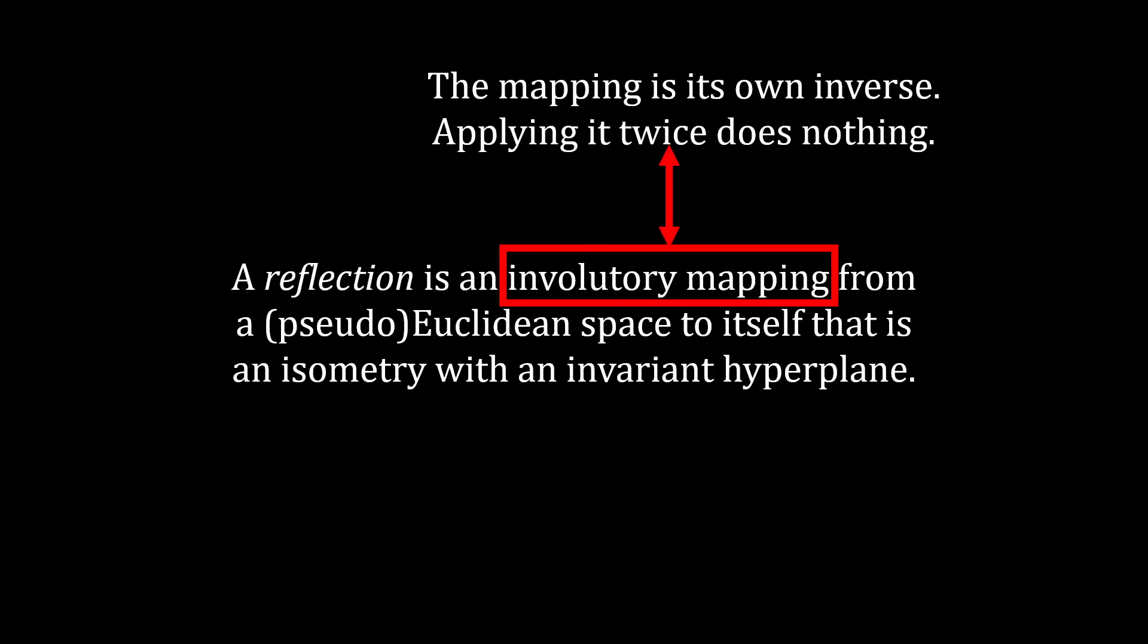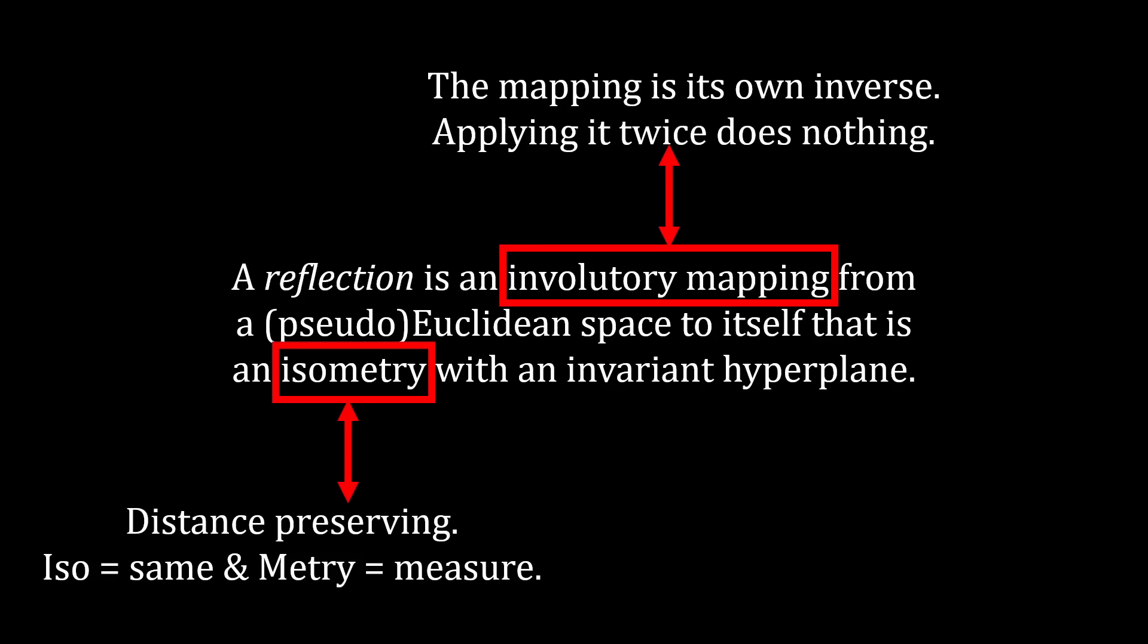The first nerd term is involuntary mapping, which means a map that is its own inverse, or rather, a mapping that, when applied twice, does nothing at all. The second term that's important is isometry, which means to preserve angles and distance. The third and final term is invariant, which means something that stays the exact same after performing the mapping. Since it is an invariant hyperplane, a reflection is associated with some hyperplane that is the same before and after the reflection.